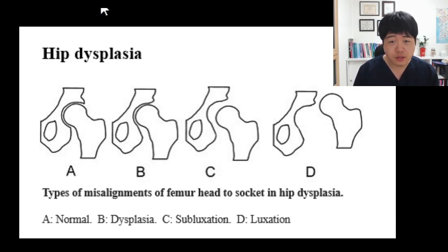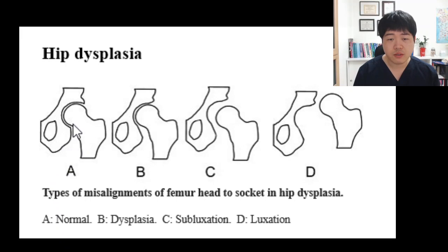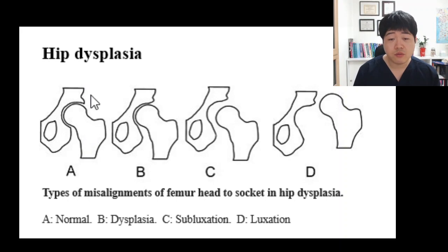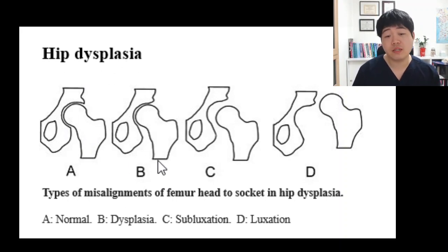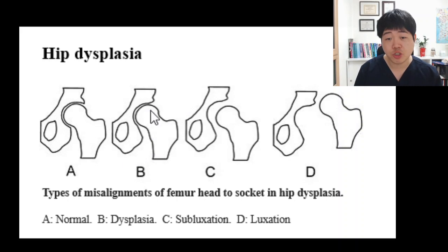Can you see those pictures? A is normal — the acetabulum and femoral head are in the right position. What about B? B can be dysplasia, because there is space, and it can result in a dislocated position.